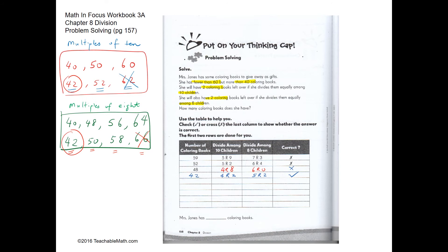We are going to check by coming back to the table. So 42, when you divide by 10, gives you 4 with a remainder of 2. And 42, when you divide by 8, gives you 5 with a remainder of 2 as well. Therefore, 42 is the answer.